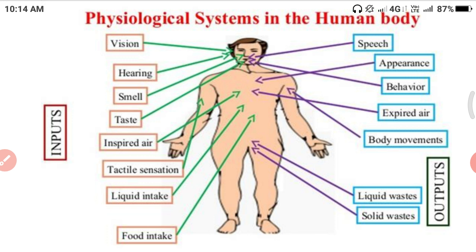The outputs of the human body include speech from the mouth, behavior such as movement of the hand or walking, appearance, expired air which is deoxygenated air coming from the lungs, body movements including walking, moving fingers, and various muscle movements, and finally solid waste as well as liquid waste. These are all the outputs of the human physiological system.